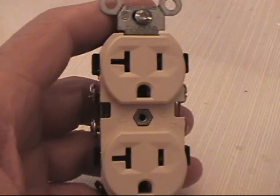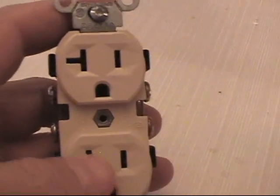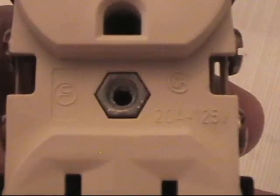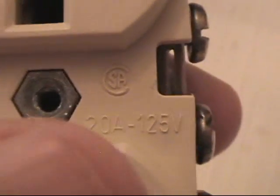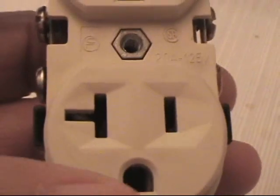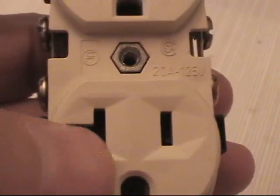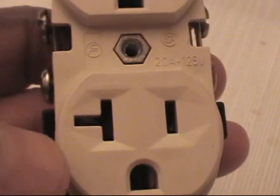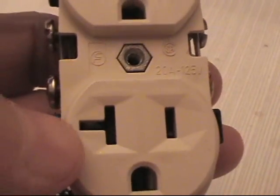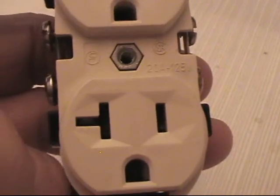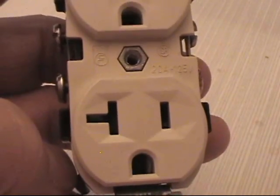Now, this is your standard duplex outlet. This particular one is a 20 amp. It's marked right there. But if you're not sure, and for some reason it may not be marked, you can tell it's a 20 amp outlet because you see this little T on the side, on the ground side here, the neutral side. When you see that, that tells you it's a 20 amp outlet.